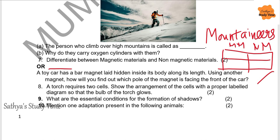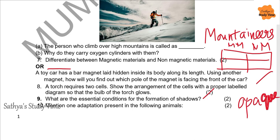Next: What are the essential conditions for the formation of shadows? Write two points: there should be an opaque material — spelling is O-P-A-Q-U-E — there should be a source of light and a screen, and the object must be placed in the path of light. Three conditions are given; you can write any one.